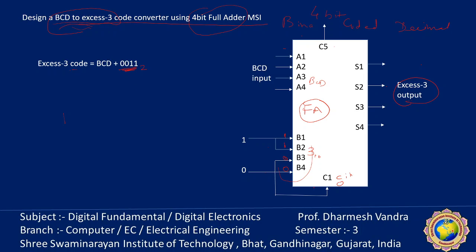I hope this is making sense to all of you — how we can use MSI circuits. Today, we discussed the 4-bit full adder parallel adder, where cascading single full adders are connected to make a 4-bit adder, which can also be extended to 8, 12, or any number of bits. The full adder circuit is also useful for logical design, as demonstrated by this example of a BCD to XS3 code converter using the 4-bit full adder circuit. I hope it was helpful. Have a good day.